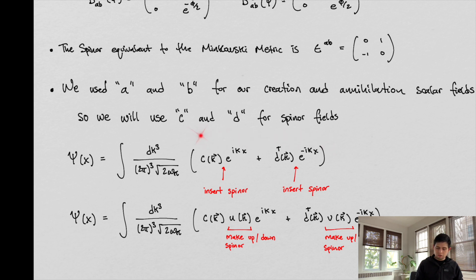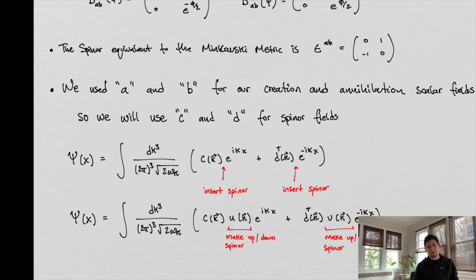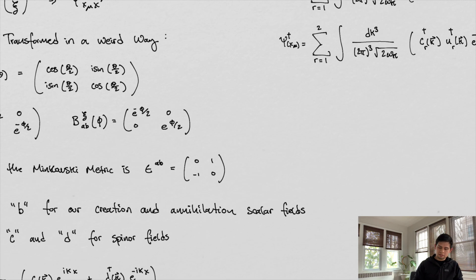What we've started with is a solution for an oscillating field. We found out that the Dirac equation describes an oscillating field — it's related to the Klein-Gordon equation — so we're stipulating this is a general solution, and you can check that it works. We want this to be unique compared to the scalar field, so we insert spinors into the solution. This gives us up and down spinners within the solution, making it a bit more specific while still being general.